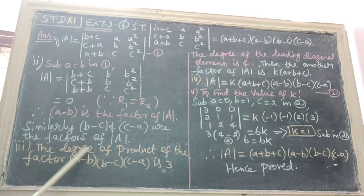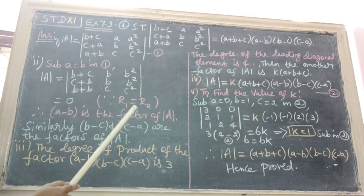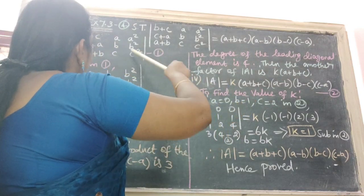Next step is the degree of product of the factors A minus B into B minus C into C minus A is 3. Next, the degree of the leading diagonal element is here 4.